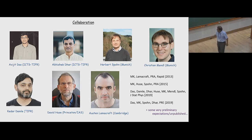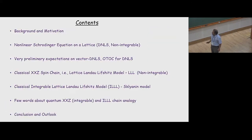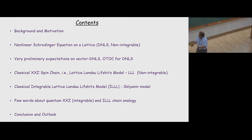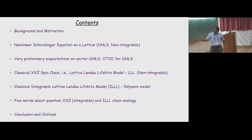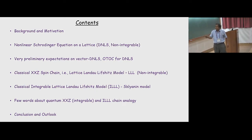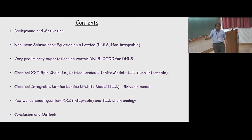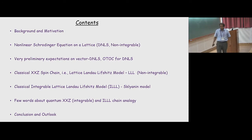I'm going to present some results and share some preliminary and expected results. After some background and motivation, I will jump to the nonlinear Schrödinger equation on a lattice — the discrete nonlinear Schrödinger equation, basically a discretization of the Gross-Pitaevskii equation which breaks integrability. Then I'll discuss vector DNLS, classical XXZ spin chain, which I call the lattice Landau-Lifshitz model, which is a classical integrable lattice model, and finally quantum-classical analogy.